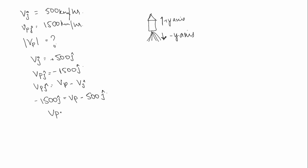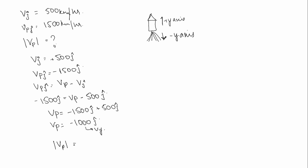So velocity of products is equal to minus 1500 j cap plus 500 j cap, which gives minus 1000 j cap. But they are asking for the magnitude of velocity of products. This is the velocity of products in the y-axis, so its magnitude is the root of velocity in the y direction squared.